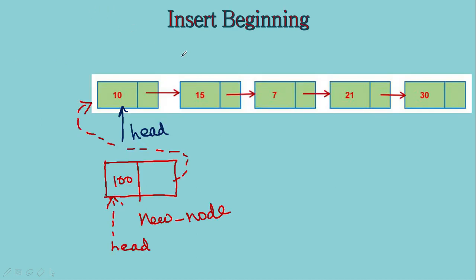Next we started the insert operations. First we begin with the insert at beginning operation — you will insert the new node in the first position. What you will do: you will create the node, place the data in the data part, make the address of the head go into the next part of the node, and then make head point to the new node. These changes do not depend on the number of elements in the list, so this operation also has time complexity of big O of 1.